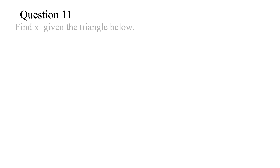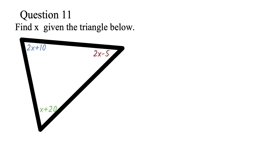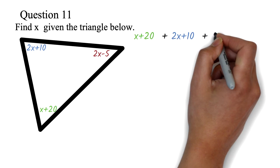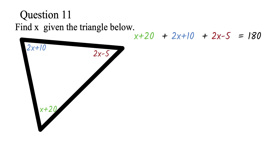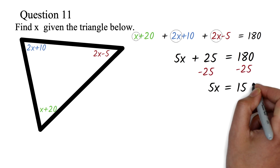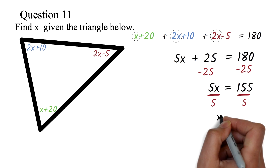Question 11: Find x given the triangle below. We add up all the angles: x plus 20, plus 2x plus 10, plus 2x minus 5 equals 180. Adding all the x terms gives 5x. Adding all the numbers: 20 plus 10 minus 5 gives 25. So we have 5x plus 25 equals 180. We subtract 25 from both sides to get 5x equals 155, then divide by 5 to get x equals 31.